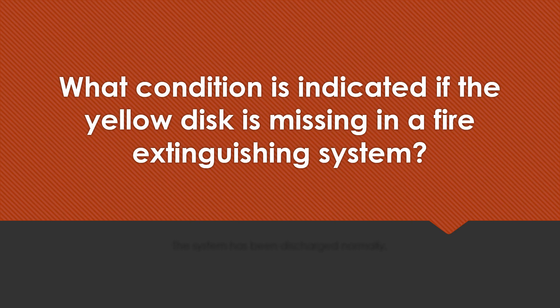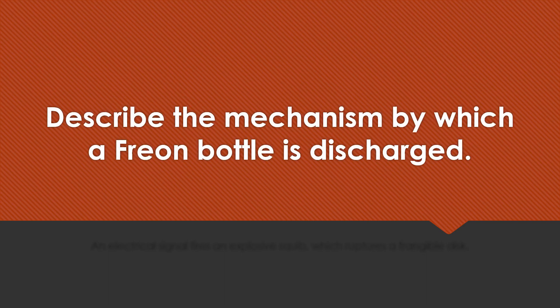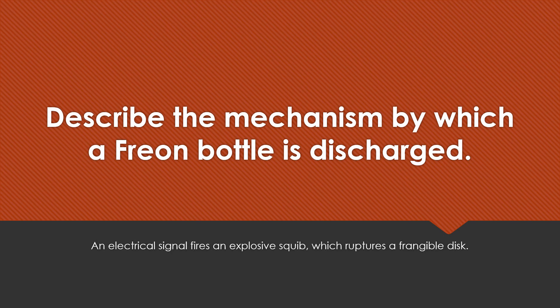What condition is indicated if the yellow disc is missing in a fire extinguishing system? The system has been discharged normally or by the pilot. Describe the mechanism by which a freon bottle is discharged. An electrical signal fires an explosive squib which ruptures a frangible disc.